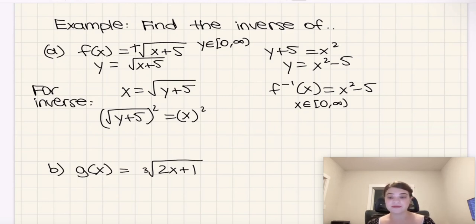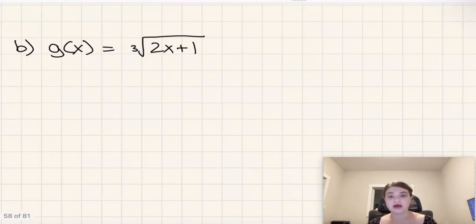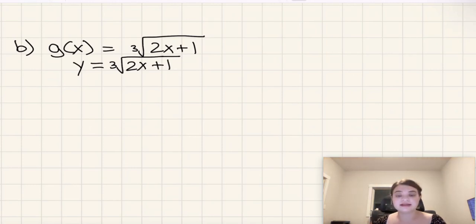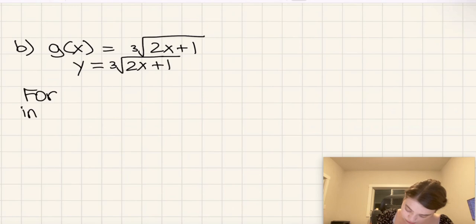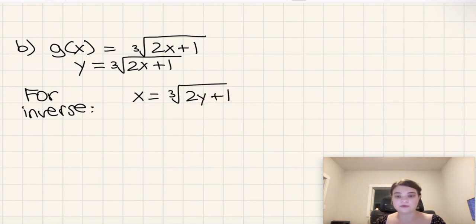All right. Now any questions about that, feel free to leave it in the comment section. Let's move on to example B. So example B is the cube root of 2x plus 1. So first thing I'm going to do here, I'm going to swap g of x for y. Next, for inverse, I'm going to swap x and y. So x equals the cube root of 2y plus 1.